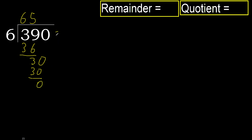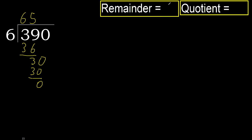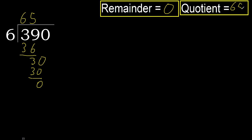Next, there is no more number, therefore finish. 390 divided by 6 is 65.